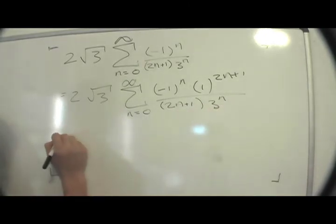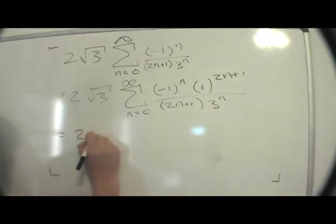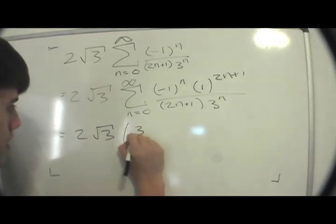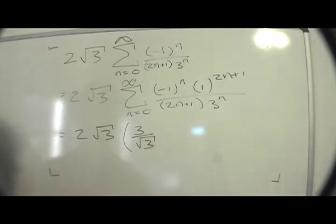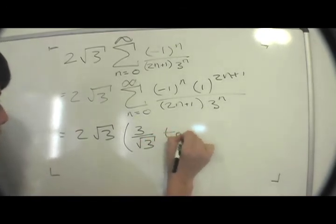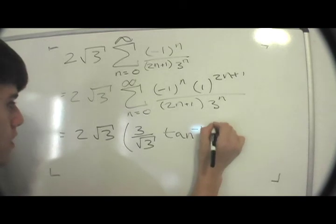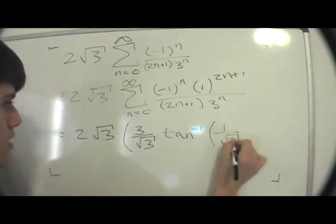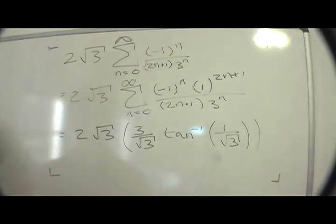So this thing should be equal to 2 radical 3 and then we had multiplied by 3 over radical 3 times tan inverse of 1 divided by radical 3. And if you know your angles, this thing is pi over 6.